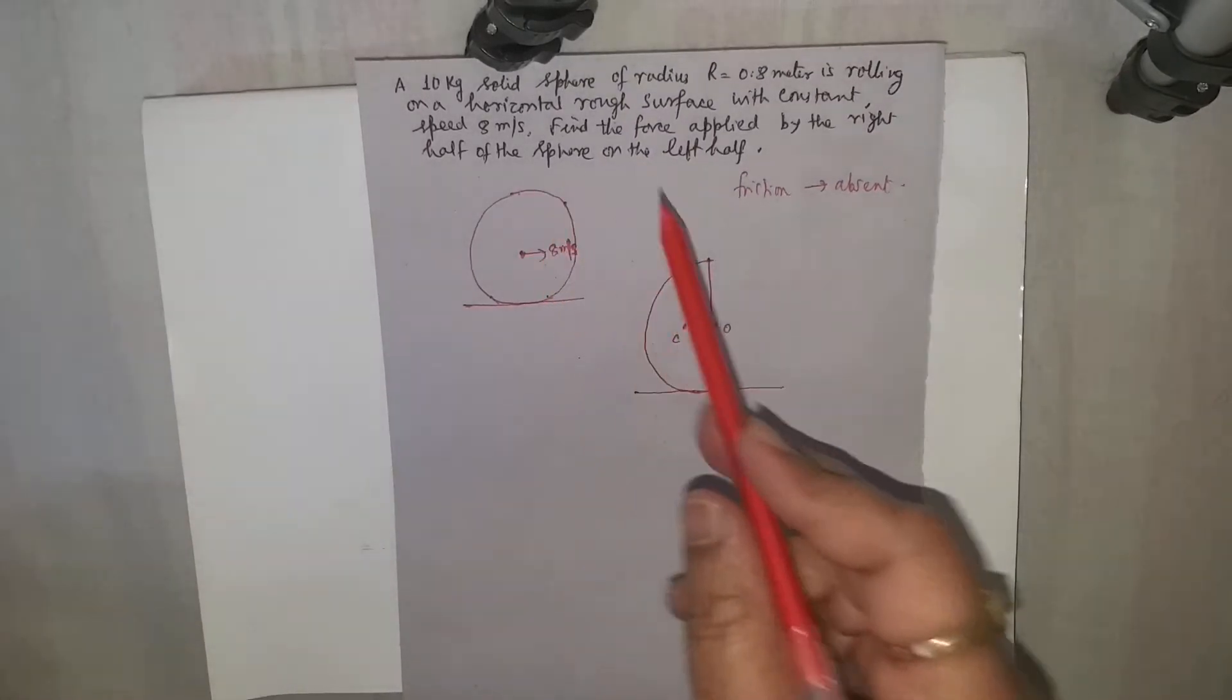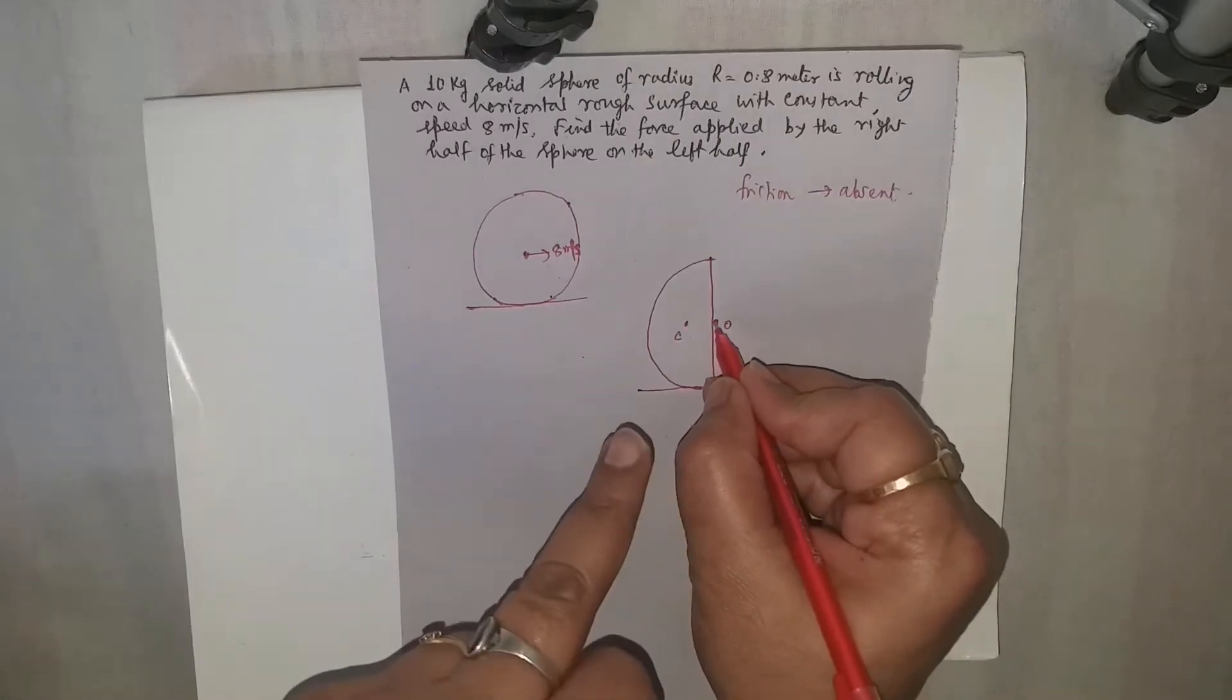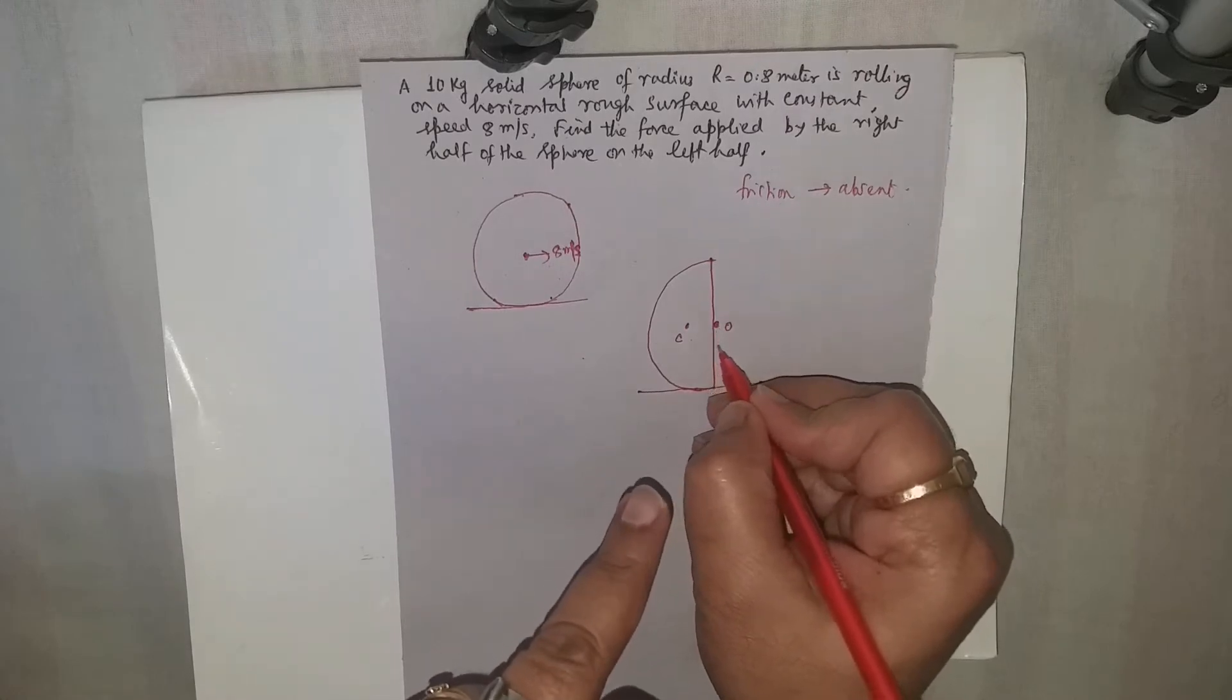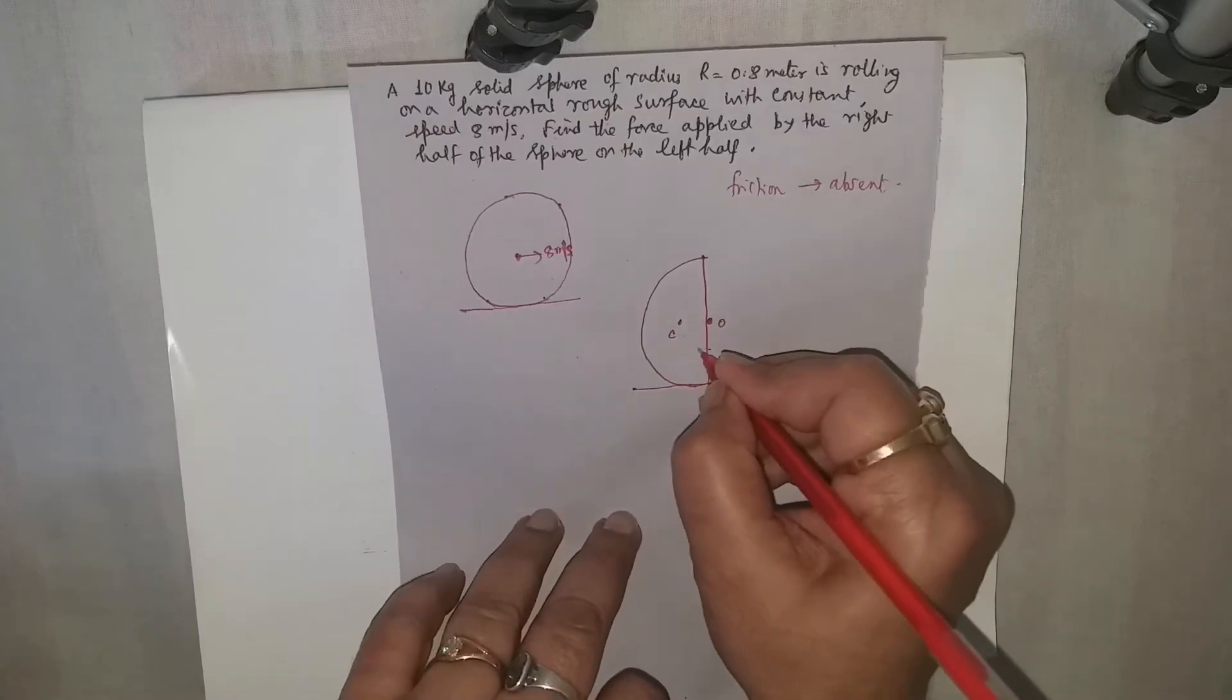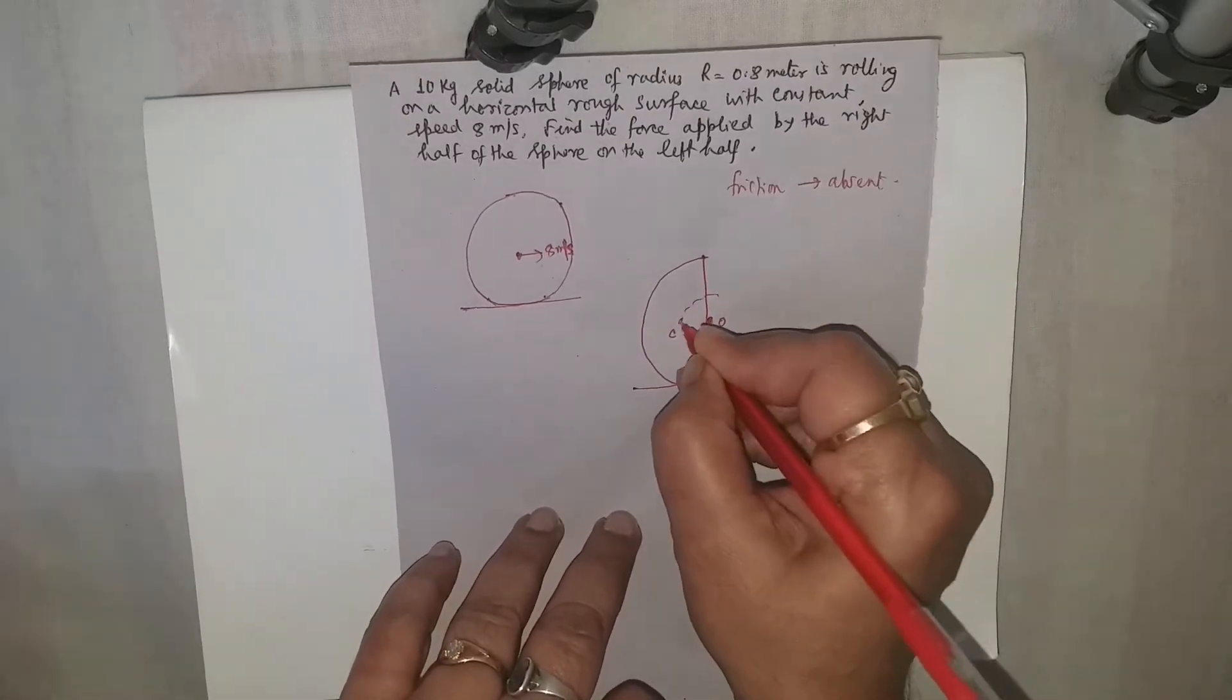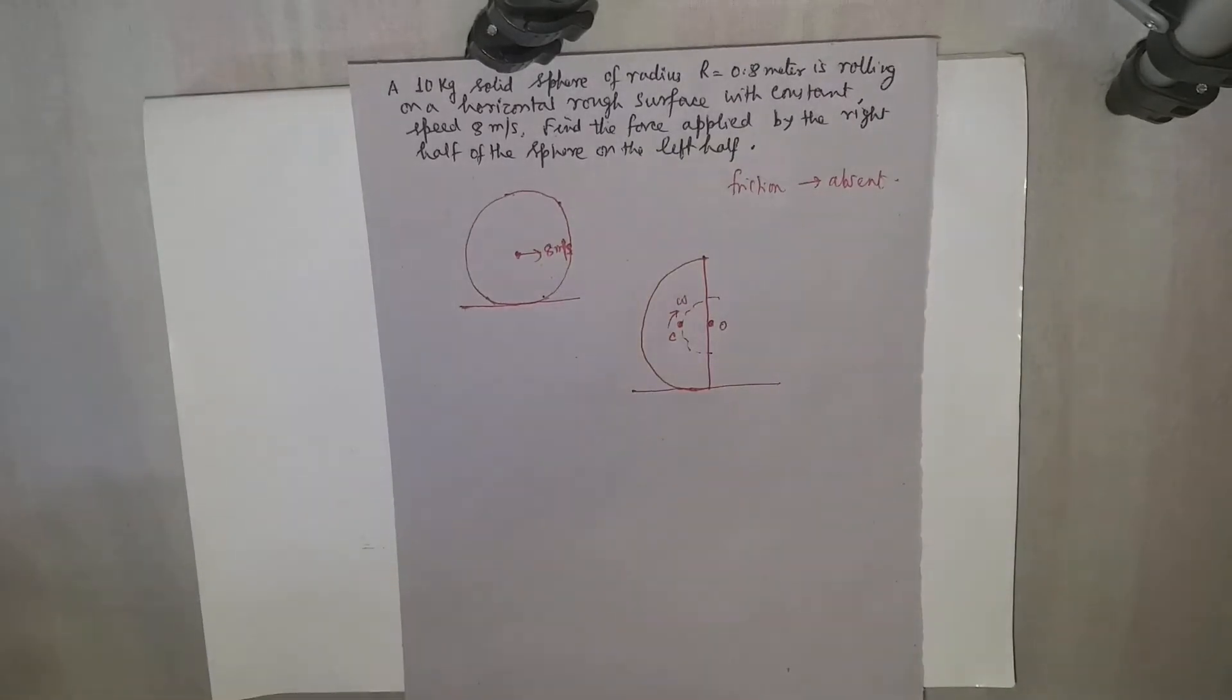Half part being a solid hemisphere, and we know that if an observer is sitting at the center, then with respect to the observer all the points will be moving in circular path. So this point will also be moving in circular path with the same angular speed as that of the angular speed of the